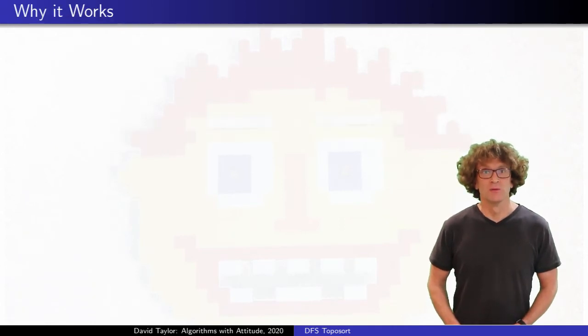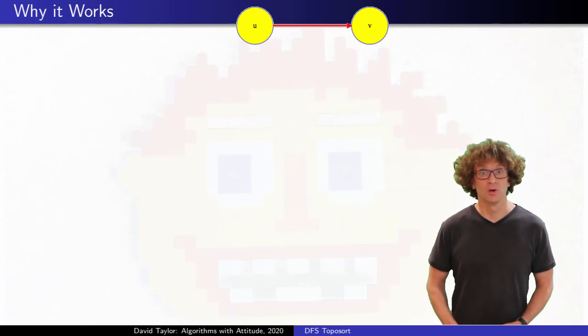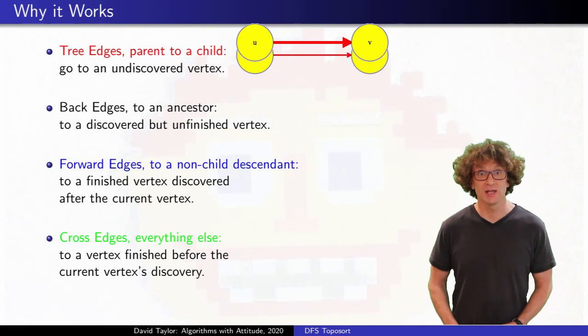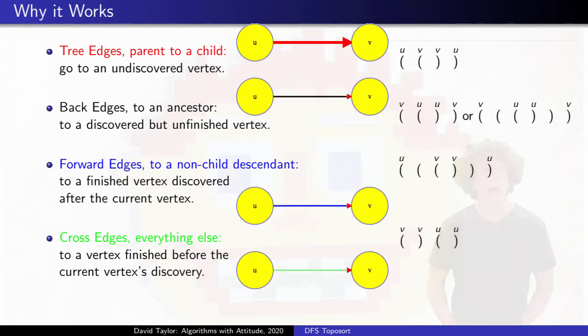So we've seen the intuition, but we should probably state why it works a bit more formally. Consider an edge from u to v in a graph. Any topological order for that graph has to put vertex u before vertex v. If you run depth first search on the graph, that edge can be classified as a tree edge, a back edge, a forward edge, or a cross edge. I'll include possible parentheses notation too.